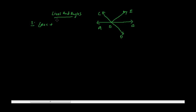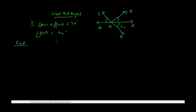It's given that angle AOC plus angle BOE is equal to 70 degrees. Also, angle BOD is equal to 40 degrees. So the sum of angle AOC and angle BOE is 70 degrees.